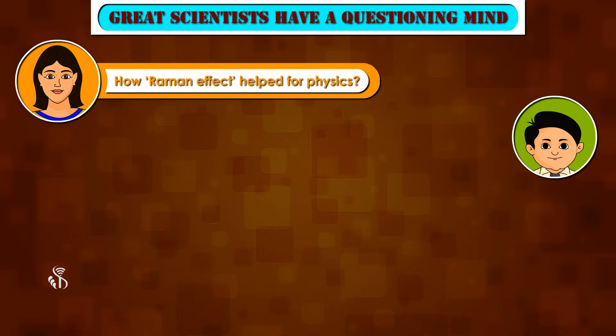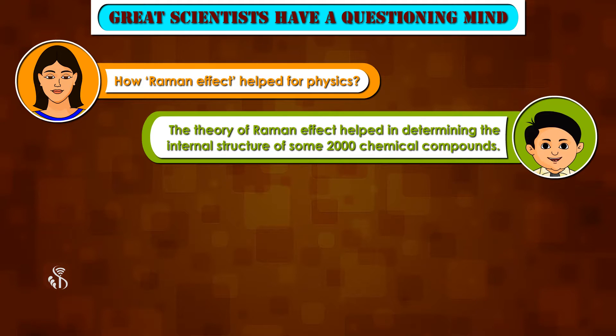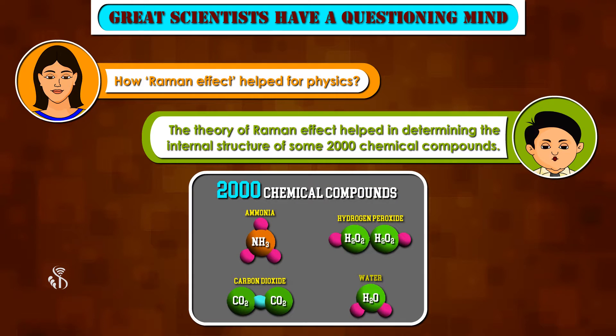How did the Raman effect help physics? The theory of the Raman effect helped in determining the internal structure of some 2000 chemical compounds.